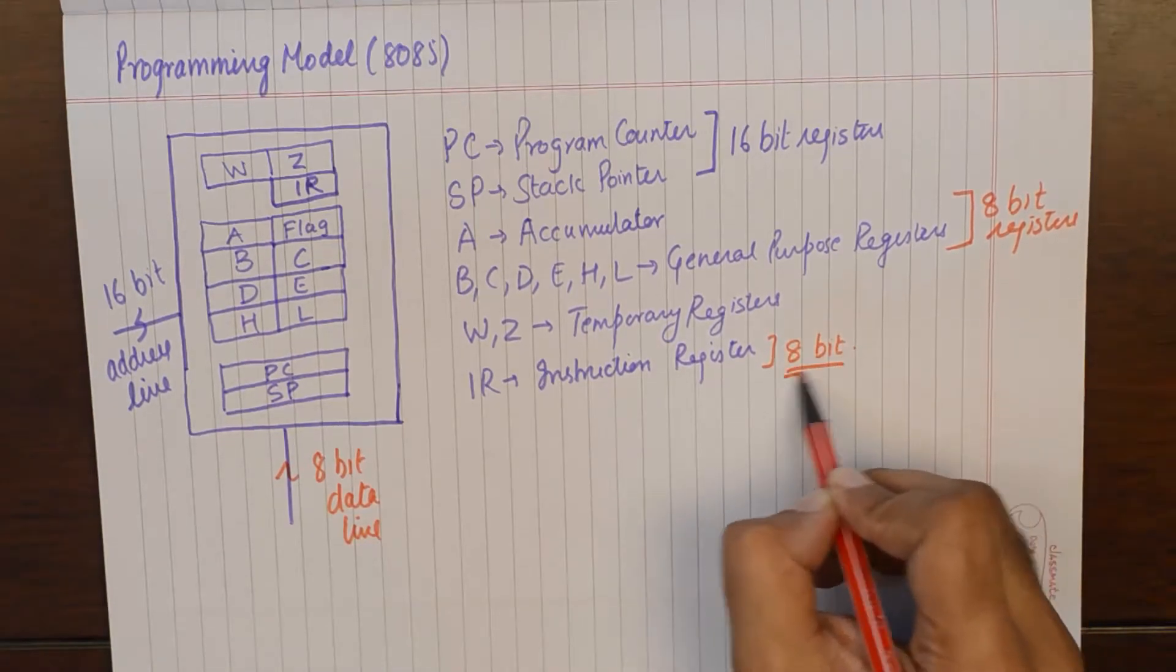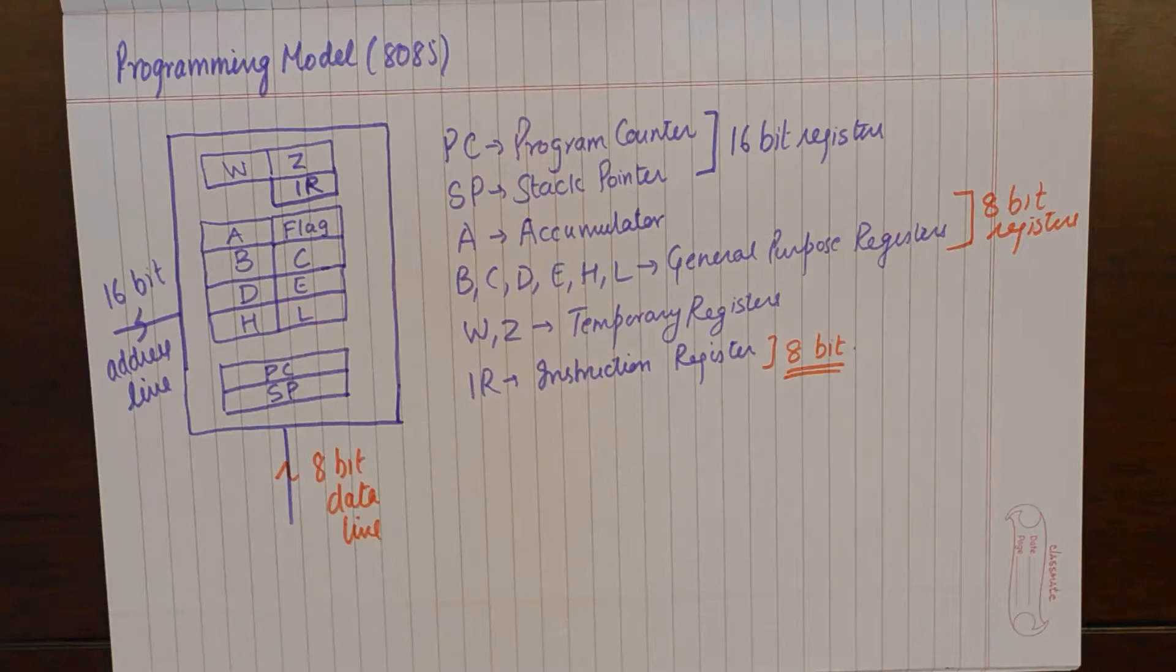So that is why our instruction register is also 8 bit long. Now if you understand that all the registers are specifically made with a purpose and they have a strong connection to the width of address line and data lines.